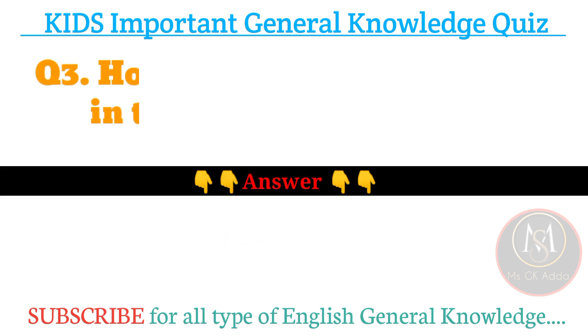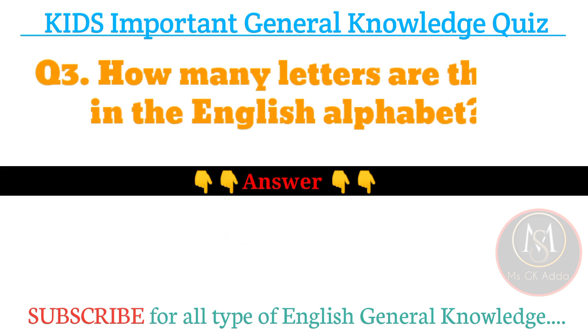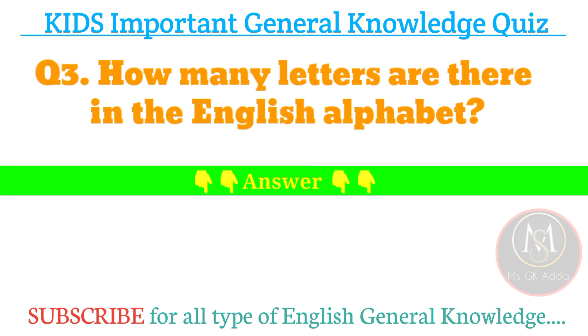Next, number three: how many letters are there in the English alphabet? Answer: twenty-six letters.